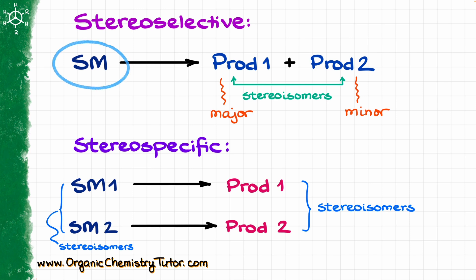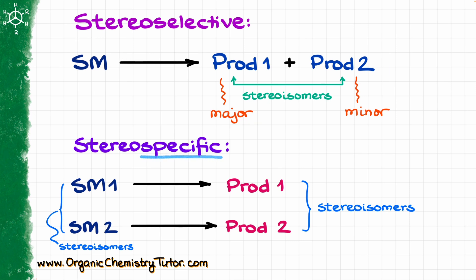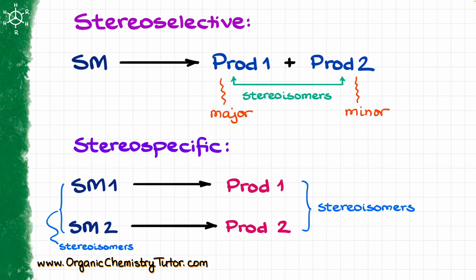As a take-home message: in the case of stereoselective reactions, you're going to have one starting material making two different products that are stereoisomers of each other, and one of those products is going to be the major product. In the case of stereospecific reactions, you're going to have two starting materials which are stereoisomers of each other, and they are each going to give you different products. For stereospecific reactions, it is physically impossible for starting material 1 to give product 2, or for starting material 2 to give product 1. For stereoselective reactions, the starting material gives both products but one is more preferred. For stereospecific reactions, the starting material can only give one stereoconfiguration of the final product — you cannot form the other stereoisomer.